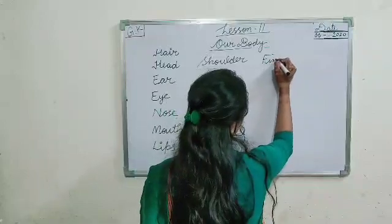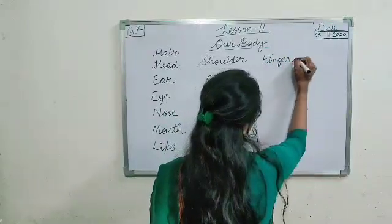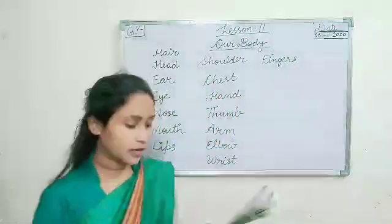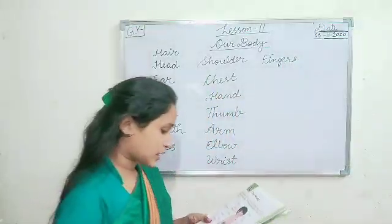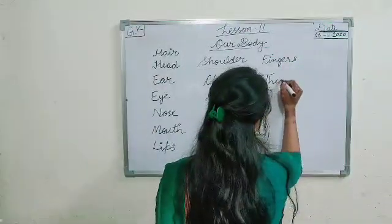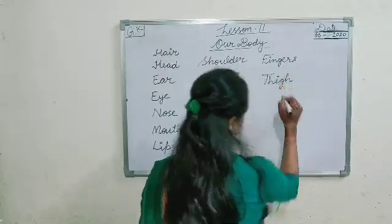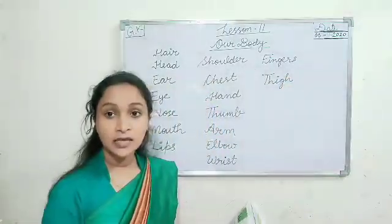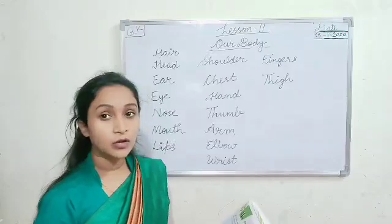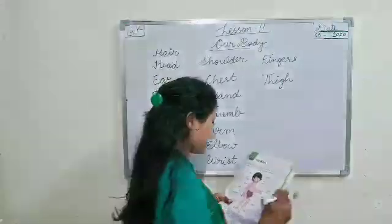Then fingers. How many fingers do we have? Ten fingers. There are ten fingers in our hand. Then thigh — T-H-I-G-H — thigh. Where is thigh? 'Jaangh' — that is called thigh.